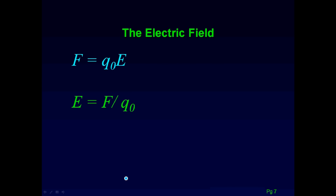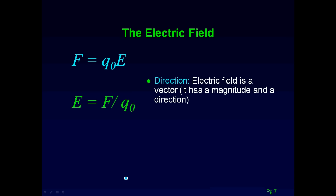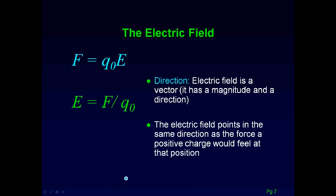The electric field is a vector, so it has a magnitude and a direction. The electric field points in the same direction as the force a positive charge would feel at that position. For units: electric field is force divided by charge, so force units are newtons and charge is coulombs — one way to write that is newtons per coulomb. We'll find some other ways to write it too.